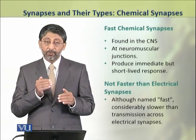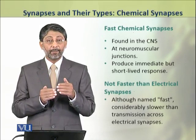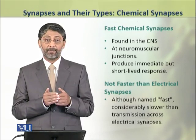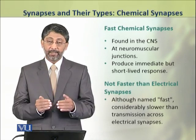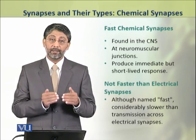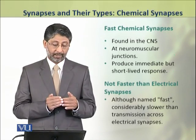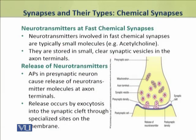The neurotransmitters involved in fast chemical transmission are typically small molecules — for example, acetylcholine. They are stored in small clear synaptic vesicles in the axon terminals.